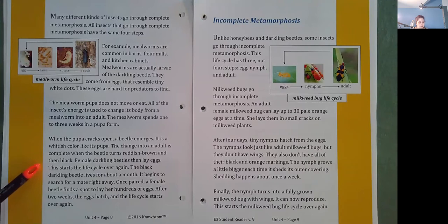The change into an adult is complete when the beetle turns reddish brown and then black. Female darkling beetles then lay eggs. This starts the life cycle over again. The black darkling beetle lives for about a month. It begins to search for a mate right away. Once paired, a female beetle finds a spot to lay her hundreds of eggs. After two weeks, the eggs hatch and the life cycle starts over again.